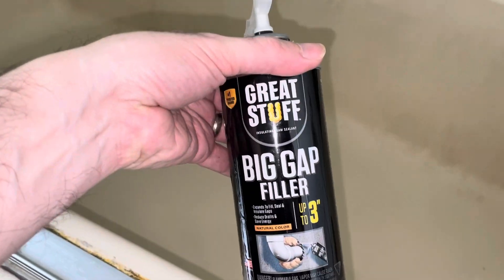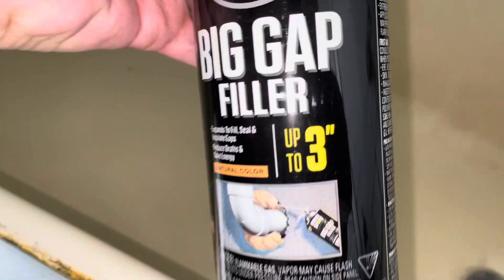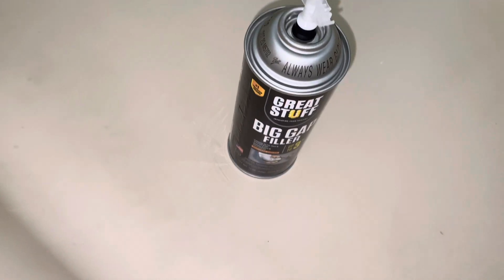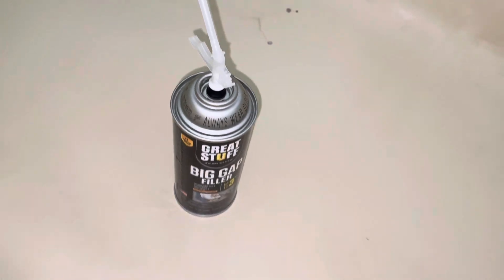Okay, so I got this Great Stuff filler, up to three inches. Basically I'm just going to put it into these holes until it overflows. That gives it the rigidity in the back so it doesn't crack like that, because that's what happened before.